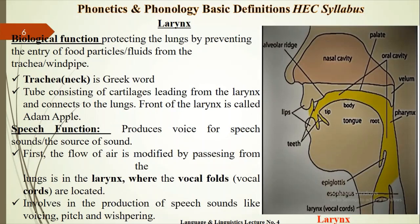The larynx is the first part after the lungs that is responsible for the flow of air. The biological function of the larynx is protecting the lungs and preventing the entry of food and fluids from the trachea or windpipe. Trachea is a Greek word which means neck. It is a tube consisting of cartilage leading from the larynx and connecting to the lungs. The front of the larynx is called the Adam's apple. It produces voice for speech sounds and is the source of sounds. The larynx is the first point at which the flow of air is modified as it passes from the lungs, and it is involved in the production of speech sounds like voicing, pitch, and whispering.